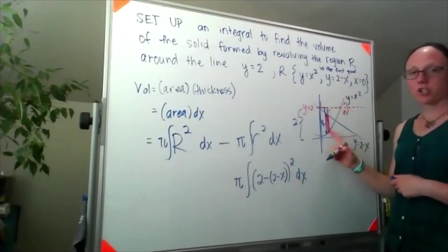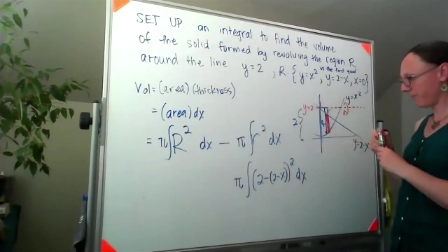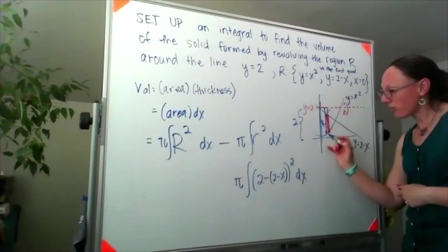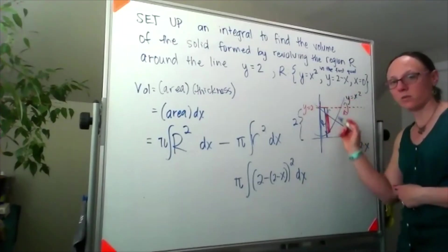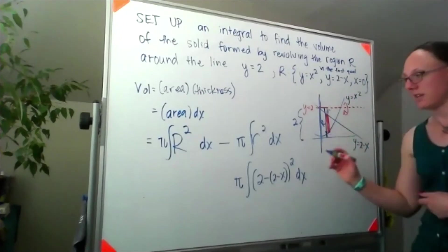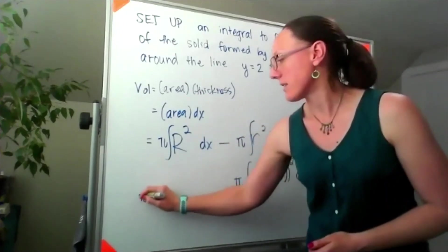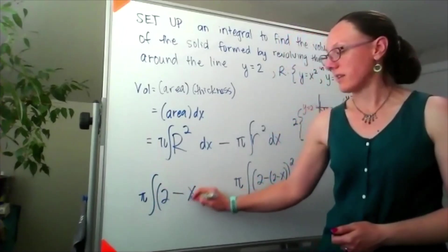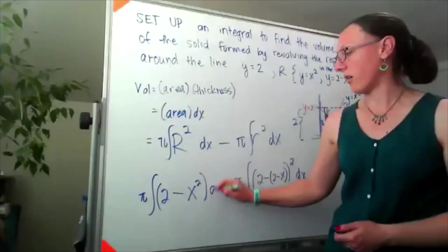The large radius I'm looking for, I'm taking the 2 and subtracting off that little bit of height that I would be getting from the y equals x squared curve. So that larger radius is 2 minus the height of the x squared curve.